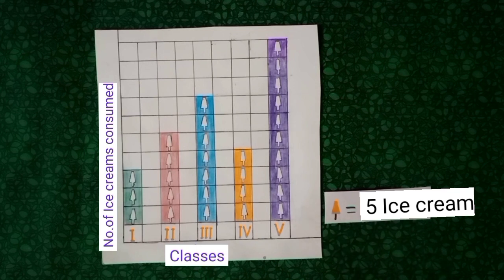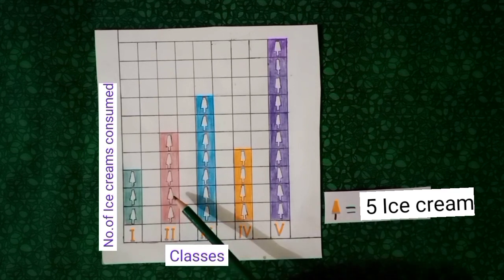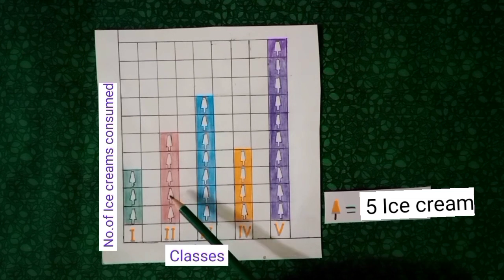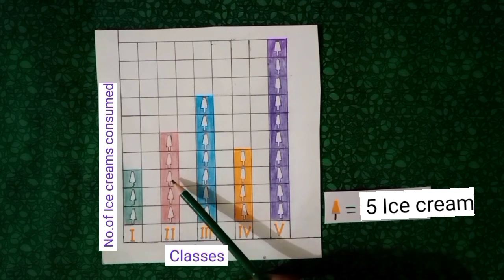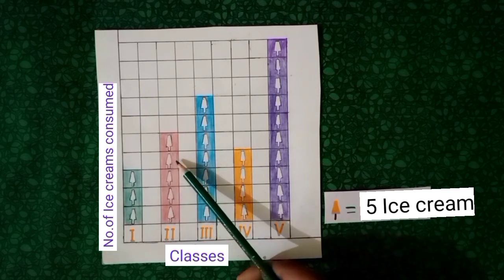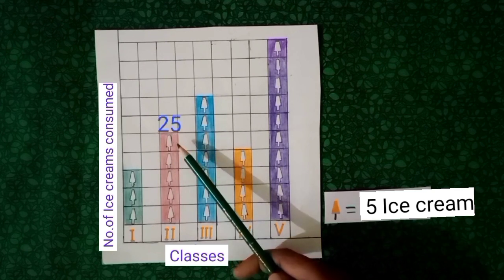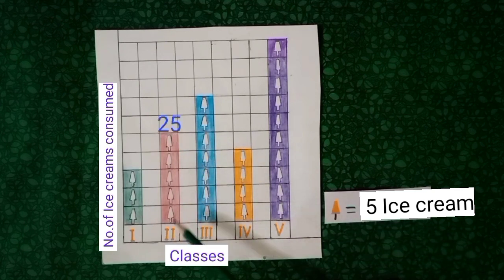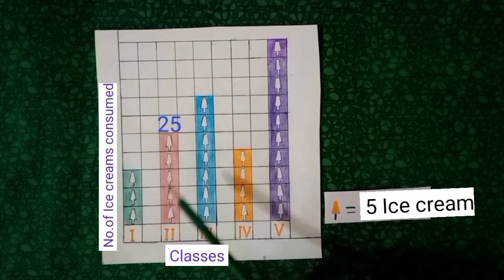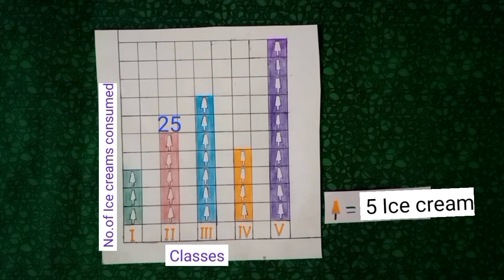Now let's see the 2nd class. Counting the symbols: 5, 10, 15, 20, 25 ice creams. 2nd class ate 25 ice creams.